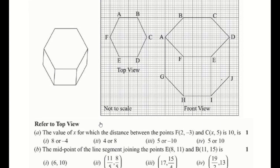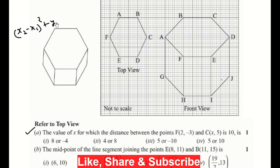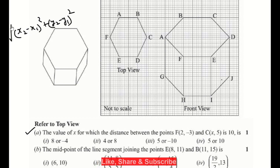Now we have some questions given on this. The value of x for which the distance between the points F(2, -3) and C(x, 5) is 10. The options are: 8 or -4, 4 or 8, 5 or -10, and 5 or 10. We have been given distance as 10, so we put it under the distance formula. The formula is: square root of (x2 minus x1) whole square plus (y2 minus y1) whole square, and this is equal to 10.